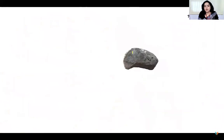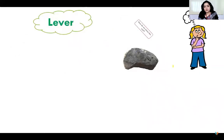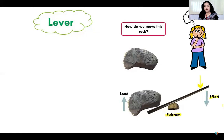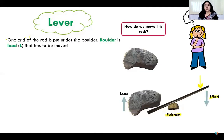The first basic machine we are going to discuss is lever. Can you see this is a type of rock? How do we move this rock? Are you able to move such a heavy rock? No, obviously, because this is very heavy. So we have to think of an idea. For example, I have put a very small stone and there is a rod below it, below this boulder. This heavy rock which we have to lift up is called the load, and below this rod in the center we have put a small stone — we call it the fulcrum.